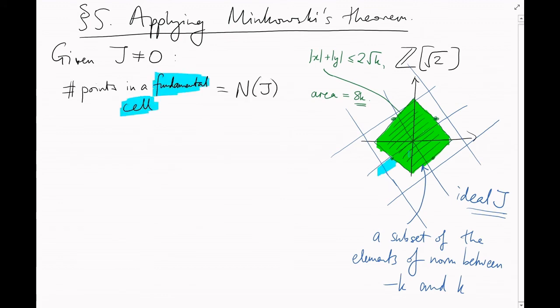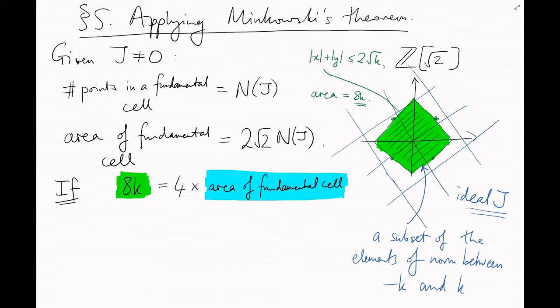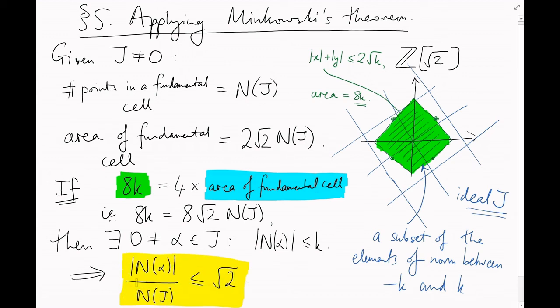Okay, so the number of points in a fundamental cell of j is the norm of j. We had to stretch it by 2 root 2 to get this picture, so the area of a fundamental cell of j is 2 root 2 times the norm of j. If k is big enough, if 8k is 4 times the size of a fundamental cell, then Minkowski tells us that this square bubble intersects j in some non-zero element alpha, and the norm of alpha is between minus k and k. That's what we want. Putting all of this together, we get the modulus of the norm of alpha divided by the norm of j is at most root 2. And so here's our bound.